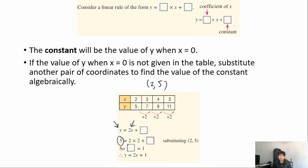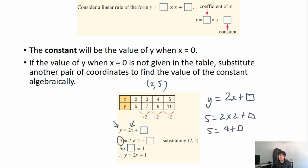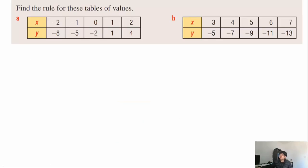Let's work through the substitution together. We have y equals 2x plus an unknown constant. Substituting the point (2, 5): y is 5 and x is 2, so 5 equals 2 times 2 plus the constant. That gives 5 equals 4 plus the constant. Subtracting 4 from both sides gives 1 equals the constant, so the constant is equal to one.